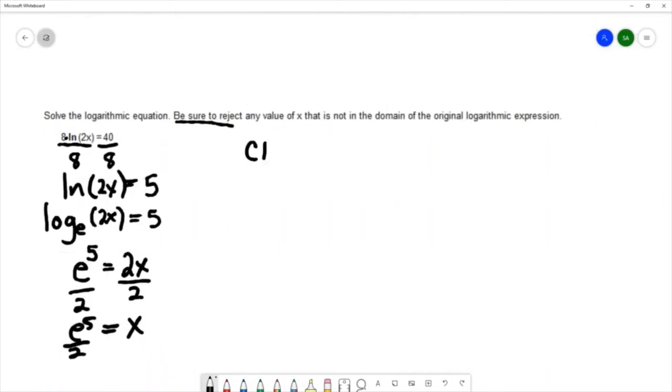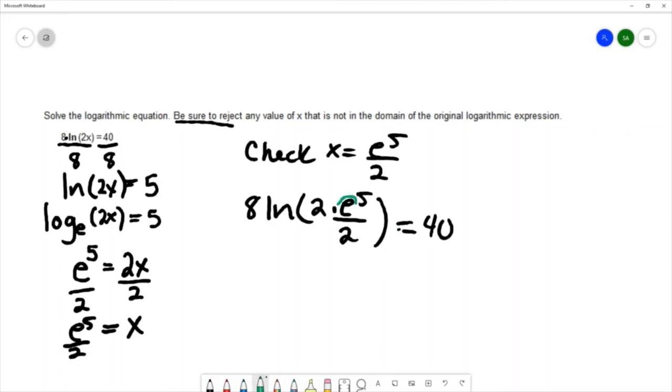We're going to check our solution of e to the 5th over 2 by substituting into the original equation. E is 2.718, that's a positive number raised to the 5th power, that'll be positive. A positive divided by a positive and then multiplied by a positive will be positive. So since we're taking the log of a positive, we're going to be able to keep this solution. And the only solution to this equation is e to the 5th over 2.